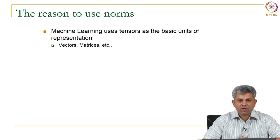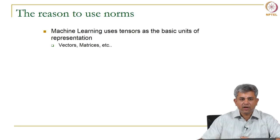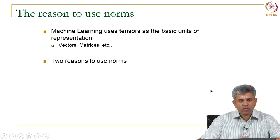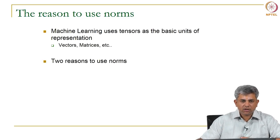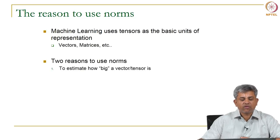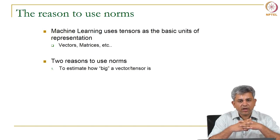As we saw in the last video, we tend to use vectors and matrices very often, basically because that is what we use to measure or represent images, sounds, or anything in fact. Anything that goes as our input or output is usually represented by vectors and matrices. So there are two basic reasons that we use norms. One is to find out how big or small a particular vector or tensor is — sometimes we need to estimate the size of something.